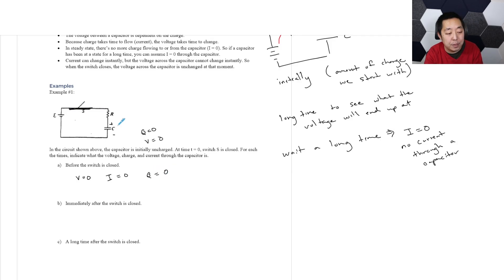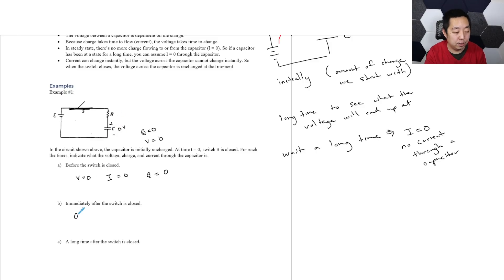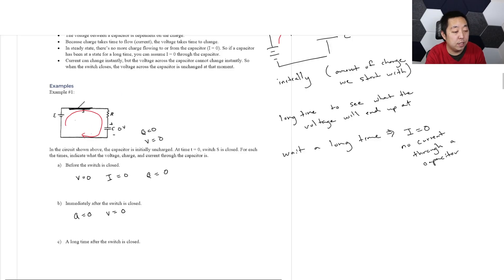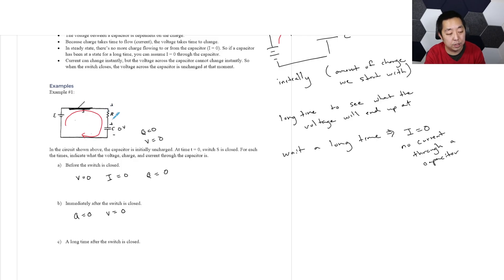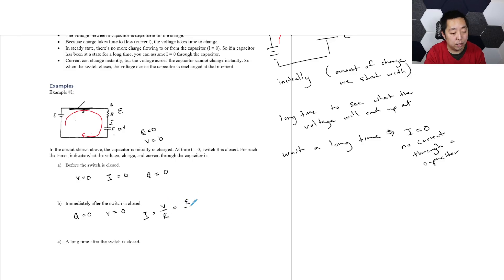Immediately after the switch is closed, the voltage was zero volts, so it's still zero volts across the capacitor — nothing has changed on that front because voltage cannot change immediately. But now we will have current flow. These are in series, so the current through the resistor is the same as the current through the capacitor. The resistor sees the full epsilon voltage. By the loop rule, this epsilon plus zero should equal epsilon here, so the current equals V over R, which is epsilon over R.